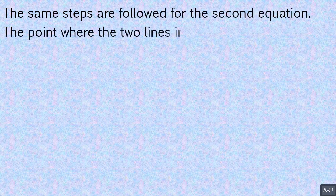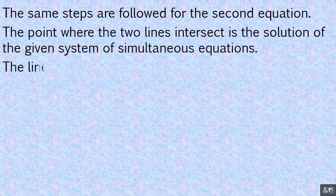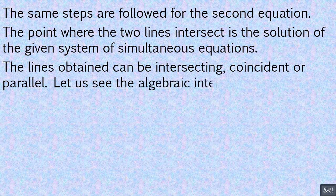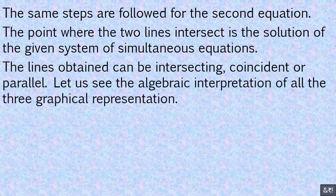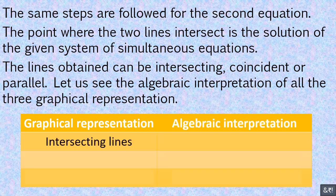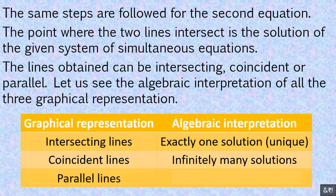The point where the two lines intersect is the solution of the given system of simultaneous equations. The lines obtained can be intersecting, coincident, or parallel. The algebraic interpretations are: intersecting lines give exactly one unique solution; coincident lines give infinitely many solutions; and parallel lines give no solution.